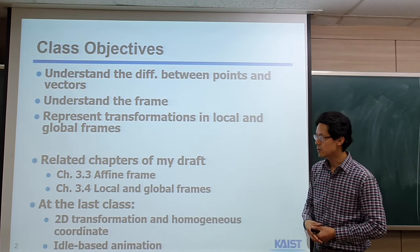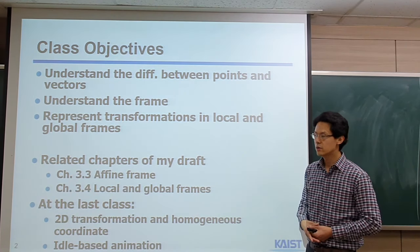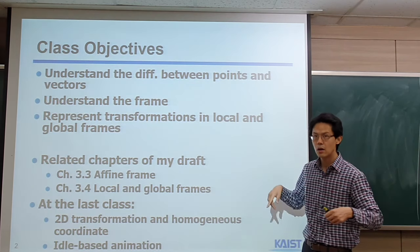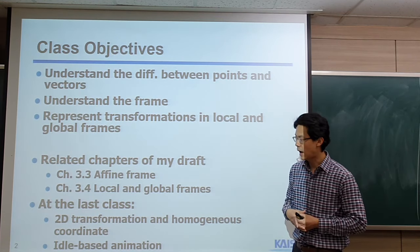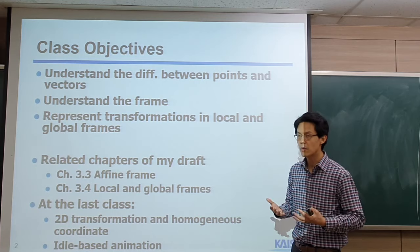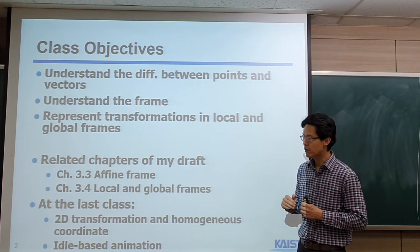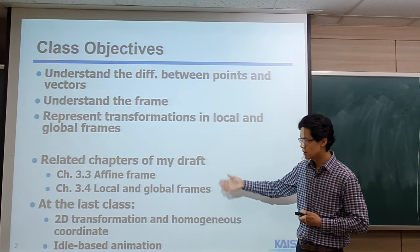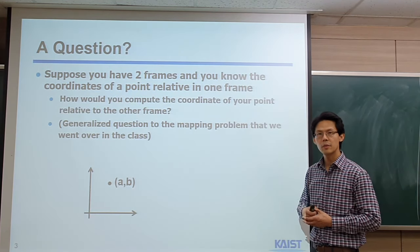Last time we talked about 2D transformations. We also introduced homogeneous coordinates to combine translations and rotations together within one matrix. As an example, I talked about the idle-based animation. The idle-based approach is not the common one, but since I talked about the callback function, I used this idle callback function. Based on that, I showed you how you can do a very simple animation. Now let's talk about today's material.